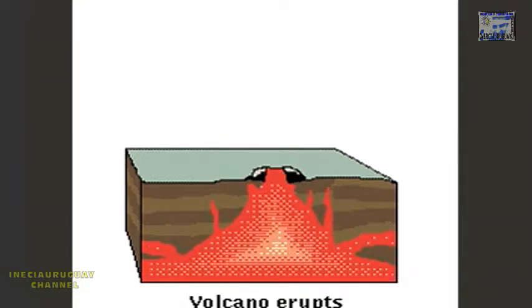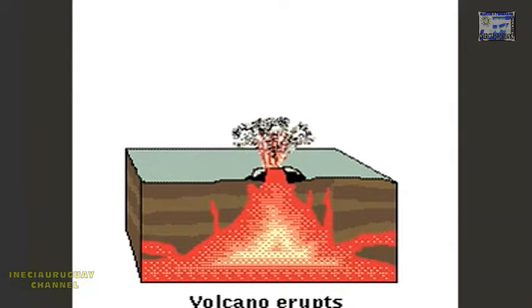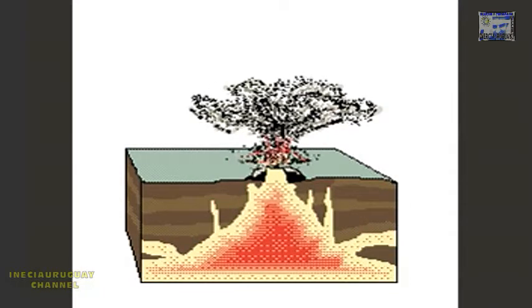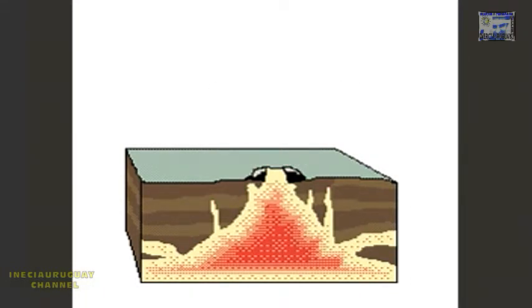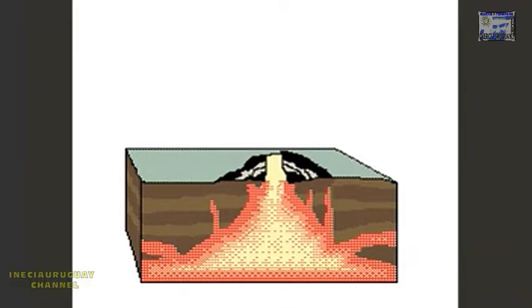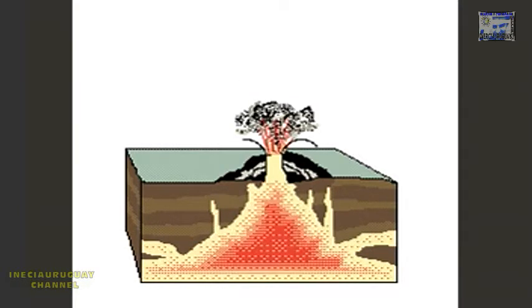A volcano may erupt many times during its lifetime of thousands of years. Material expelled during the eruptions gradually builds up a cone-shaped mountain.